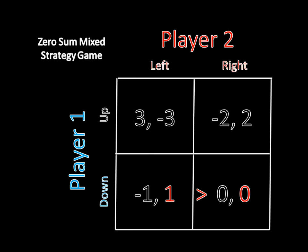But if player one is always going down, then player two will always want to go left. Yet a couple of slides ago, we claimed that player two would mix between left and right. That's a contradiction and that's a big problem.